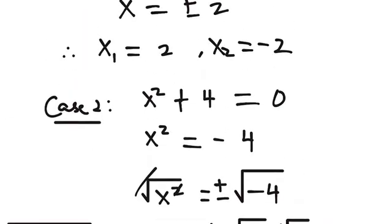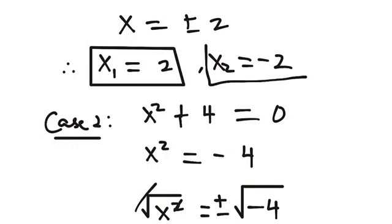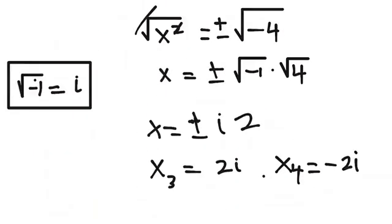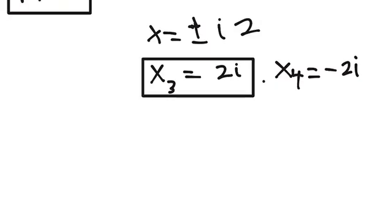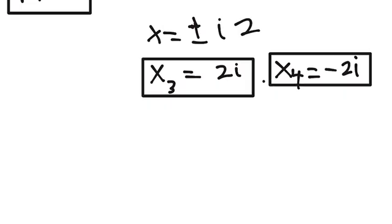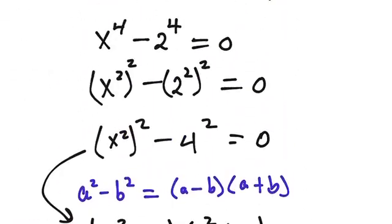So from Case 1 we have x₁ equals 2 and x₂ equals minus 2, and from Case 2 we have x₃ equals 2i and x₄ equals negative 2i — making up four solutions in total.